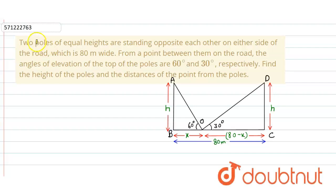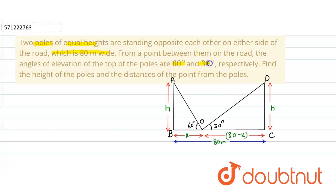In the given question, two poles of equal heights are standing opposite each other on either side of the road which is 80 meters wide. From a point between them on the road, the angle of elevation of the top of the poles are 60 degrees and 30 degrees. We have to find the height of the poles and the distance of the point from the poles.